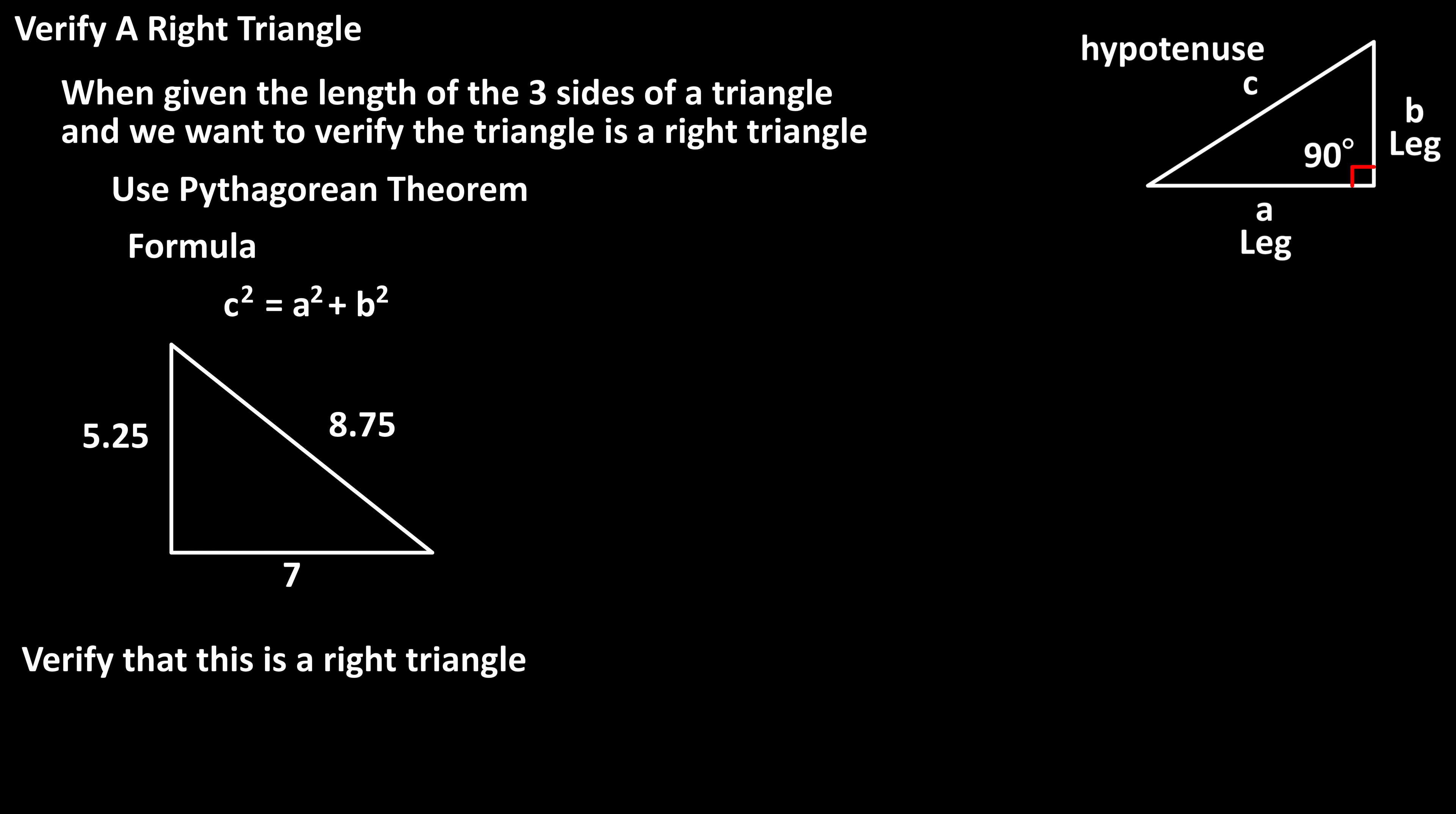To do this, we use the variables from the Pythagorean theorem: c squared equals a squared plus b squared. We first square all of the lengths of the sides. So we have 5.25 squared, which equals 27.5625. Next is 7 squared, which equals 49, and then 8.75 squared, which equals 76.5625.